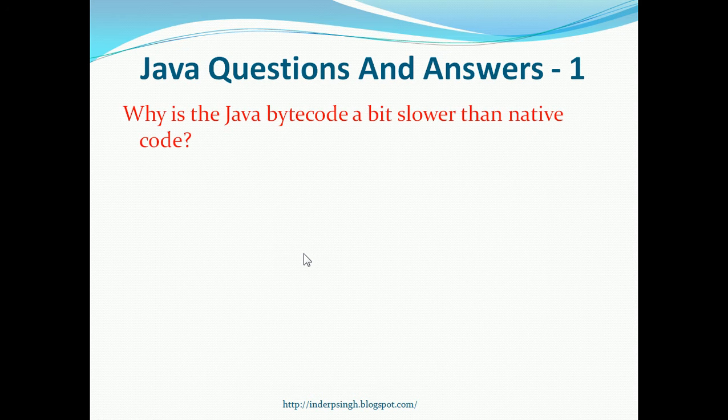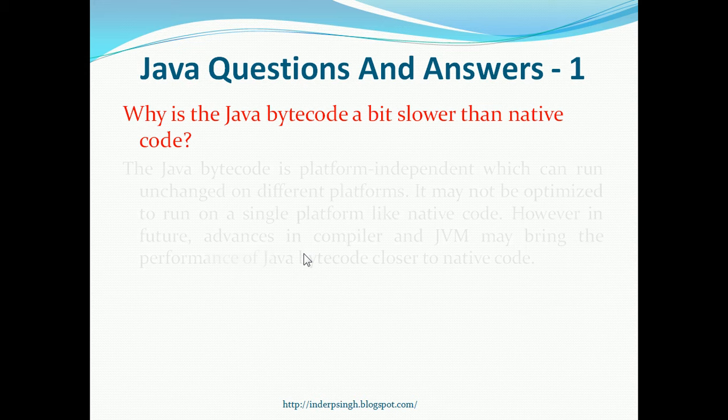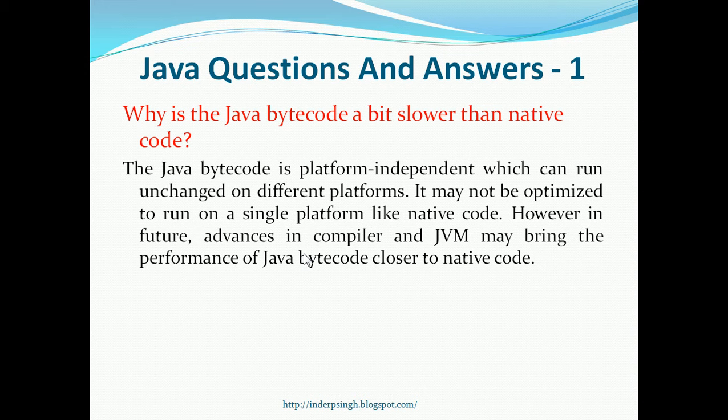The first question is why is Java bytecode a bit slower than native code? The Java bytecode is platform independent, so it can run unchanged on different platforms. It may not be optimized to run on a single platform like native code. However, in future advances in compiler and JVM may bring the performance of Java bytecode closer to native code.